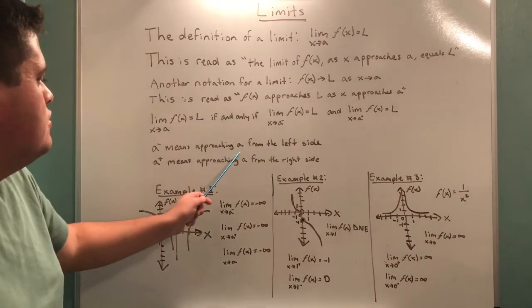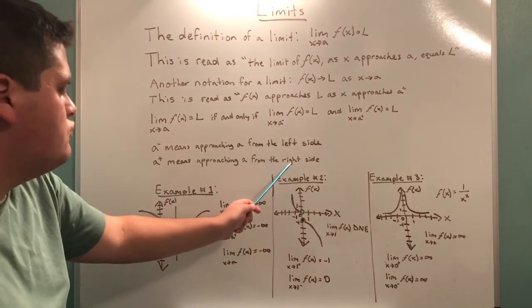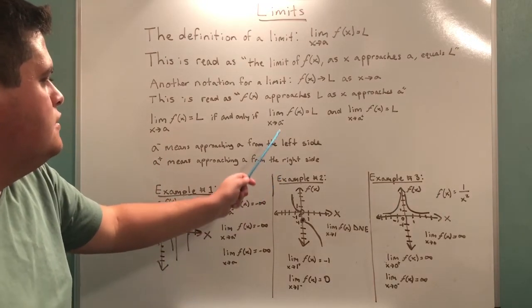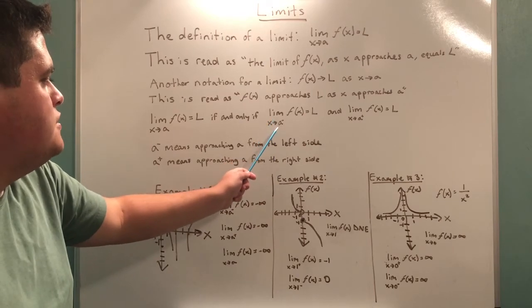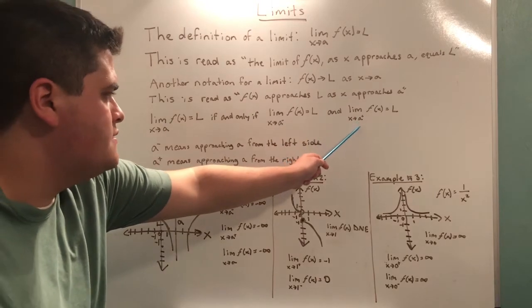A minus means approaching a from the left side. A positive means approaching a from the right side. So the limit as x approaches a from the left side must equal the limit as x approaches a from the right side.